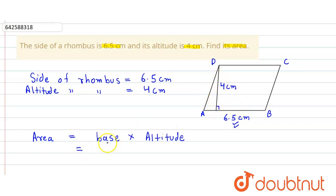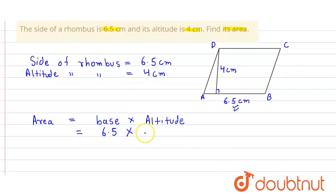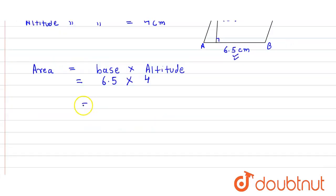So here we get the value of base is given to be the side of the rhombus, which is 6.5 cm. So it is 6.5 into the altitude, which is equal to 4. So here when we multiply it, we get equal to 26 centimeter square.